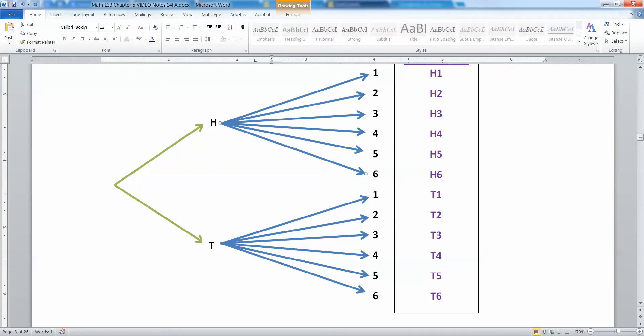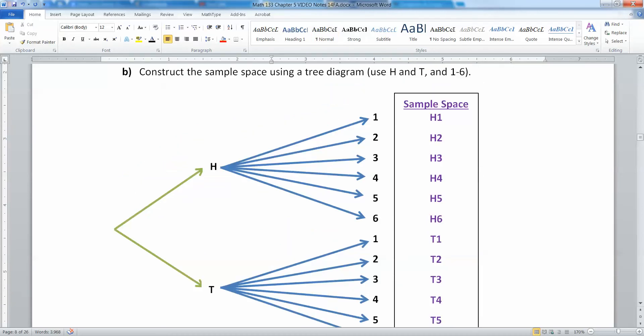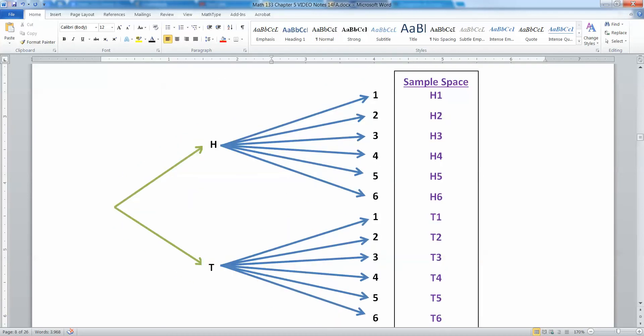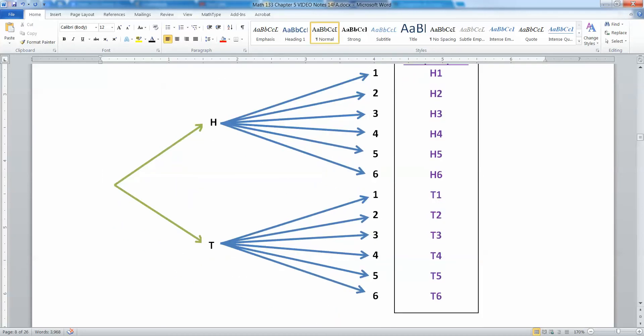One, two, three, four, five, six, because the die could roll one, two, three, four, five, or six. That gives me my sample space outcomes of H1, H2, H3, H4, H5, H6, and so on. And then I have T1, T2, and so on through T6. So there's my sample space listing over here on the right. And this tree diagram helped me build it.